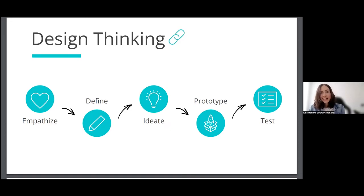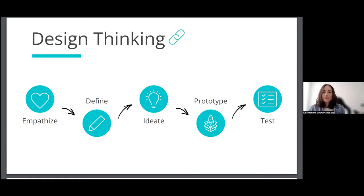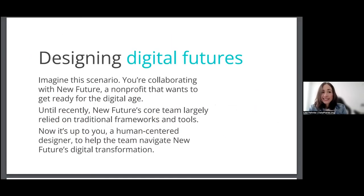So as you can see, design thinking is neither rocket science nor easy. It's not a linear process. Basically, you try to understand the problem by engaging with people, define the problem, ideate solutions based on that definition, build prototypes, collect feedback, and then loop back — because it's not a linear process.